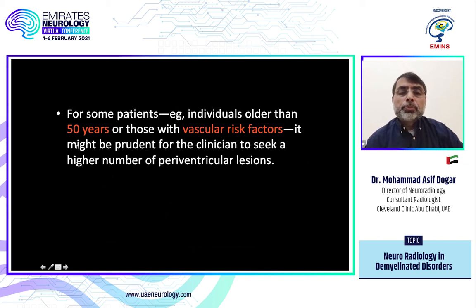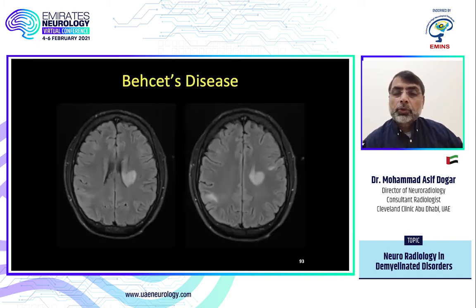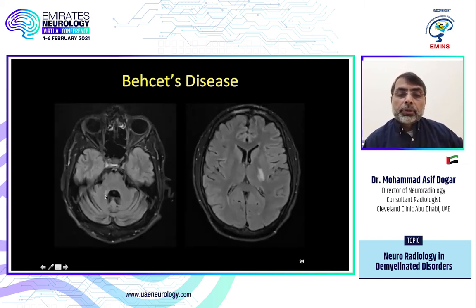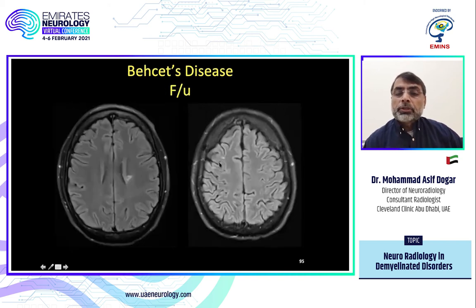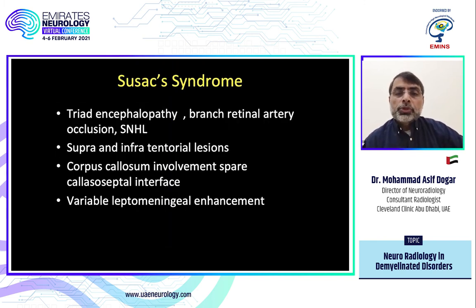If the patient is more than 50 years old or has vascular risk factors, according to McDonald criteria we should look for more lesions — one lesion is sufficient but more are recommended. Here is a Susac disease case with periventricular and juxtacortical lesions, involvement of the internal capsule, and even the middle cerebellar peduncle. Everything is not MS — we must look at the clinical findings. On follow-up this case looks like juxtacortical and periventricular lesions resembling MS, but it is Susac disease.